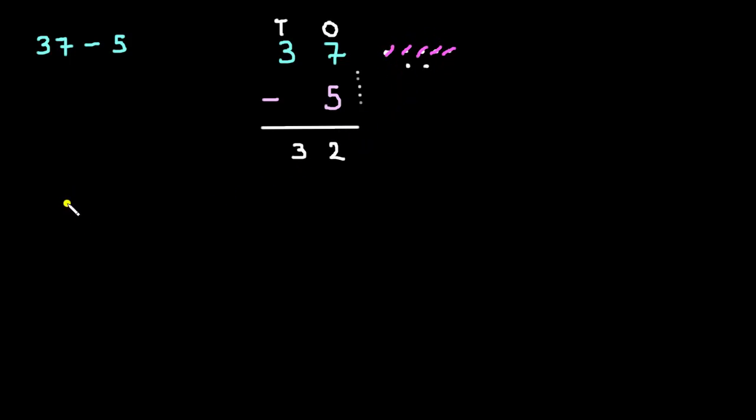Let's take one more example. Now, I have 46 minus 23. Now, here you can see we have 2-digit numbers. Both are of 2 digits. So, 46. This is 1's place and this is 10's place. Here again, we have a 2-digit number. So, we will put 1's below 1's and 10's below 10's. Now, let's subtract them.